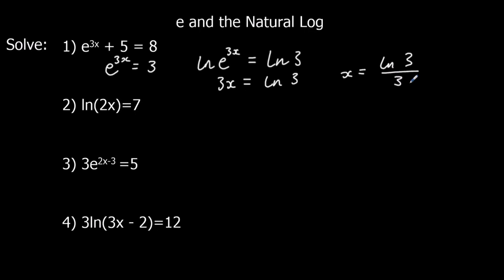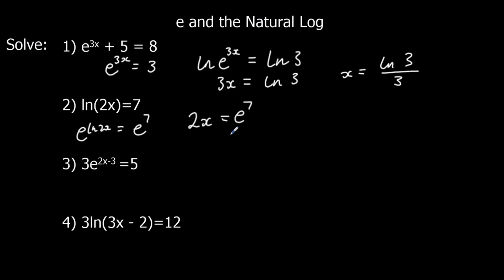Second question: ln(2x) = 7. We get rid of ln by applying e to both sides: e^(ln(2x)) = e^7. ln cancels, so 2x = e^7. Then divide both sides by 2, which gives x = e^7 over 2.